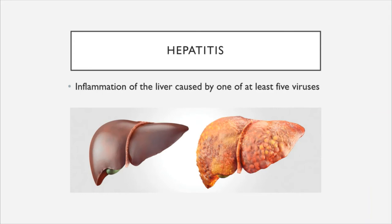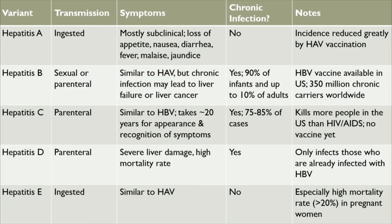Next, we have hepatitis, which pertains to inflammation of the liver, one of the accessory structures of the digestive tract. Here we are only concerned with hepatitis caused by viruses, and there are five different viruses known to cause it, named Hepatitis A through E. Hepatitis A is ingested orally, and symptoms are mostly subclinical but include loss of appetite, nausea, diarrhea, fever, malaise, and jaundice. Hepatitis A does not develop into chronic infections and there is a vaccine that has greatly reduced its incidence.